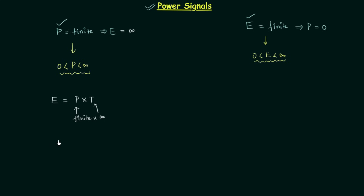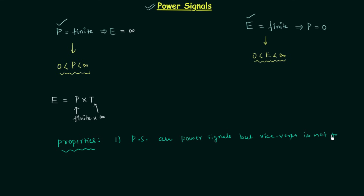Now we will see a few properties of power signals. The first property concerns periodic signals: periodic signals are power signals, but the vice versa is not true. This means every periodic signal is a power signal, but a power signal need not be periodic. Periodic signals are power signals because they extend from minus infinity to infinity with a repeating structure, giving finite average power and infinite energy.